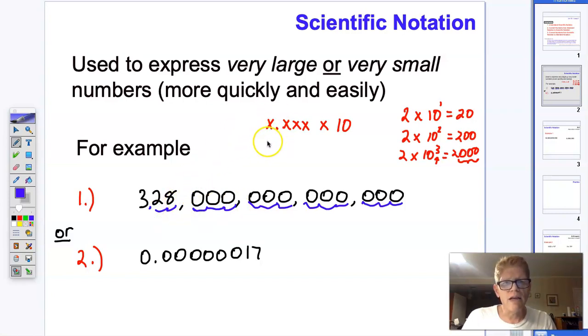And then I would write my 3 here, because I only get one digit to the left of the decimal, my decimal point, and then any other significant digits. Those are the numbers that aren't 0—28—times 10 to the whatever power. So 3, 6, 9, 12, 14—10 to the 14th.